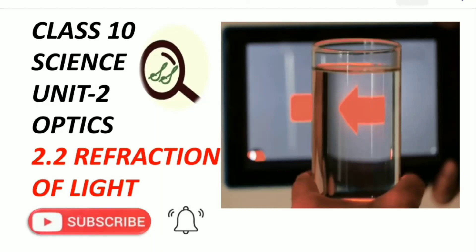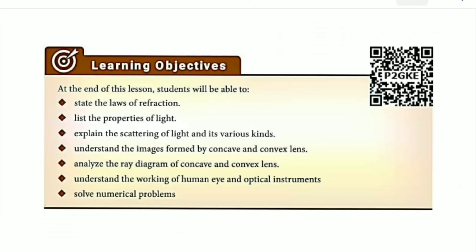Greetings from SS Class 10 Science, Unit 2: Optics, Refraction of Light. In this lesson, students will be able to state the laws of refraction, list the properties of light, explain the scattering of light and its various kinds, understand the images formed by concave and convex lens, analyze the ray diagram of concave and convex lens, understand the working of human eye and optical instruments, and solve numerical problems. These are your learning objectives.